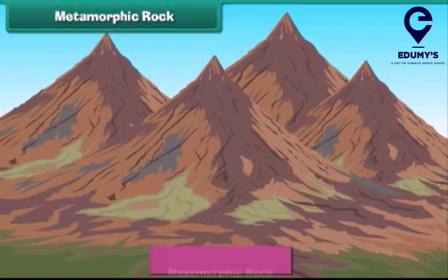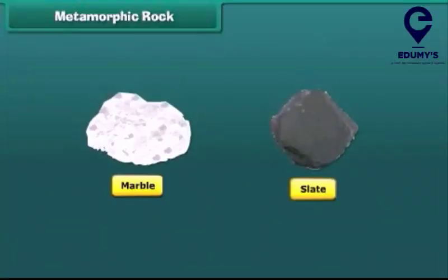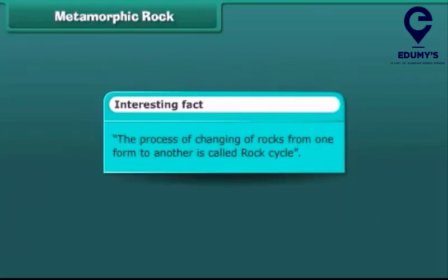Now we come to metamorphic rock. It is formed either from igneous or sedimentary rock. Igneous or sedimentary rocks are changed or get modified into metamorphic rock due to the influence of heat and pressure. This process occurs deep inside the earth. Metamorphic rock is usually hard and often contains crystals. Marble and slate are examples of this kind of rock.